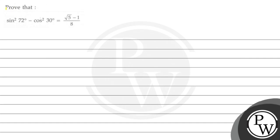Let us read the question first. The question is: prove that sin²72° - cos²30° = (√5 - 1)/8.